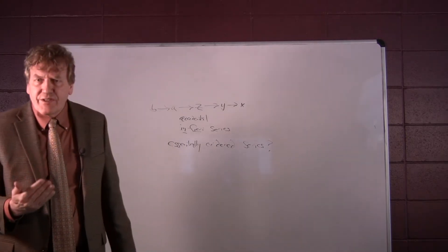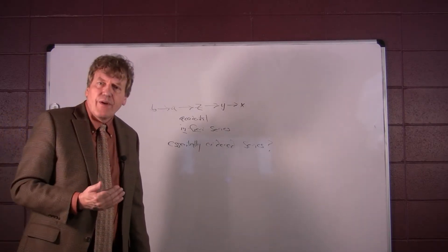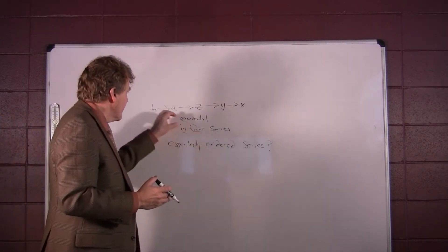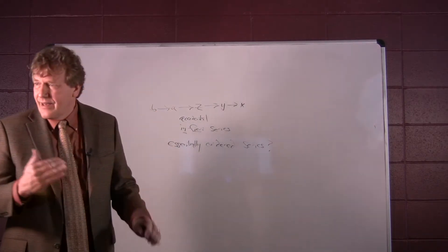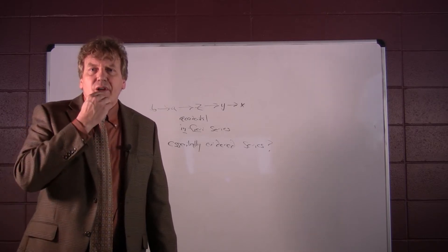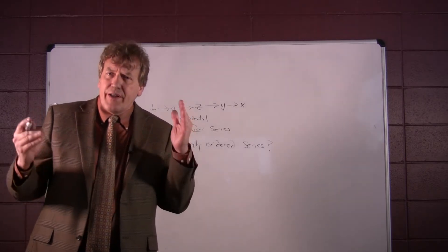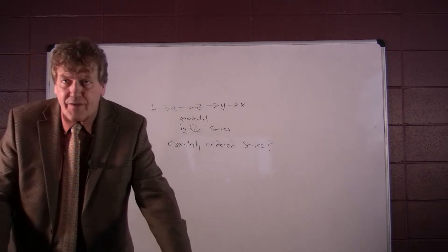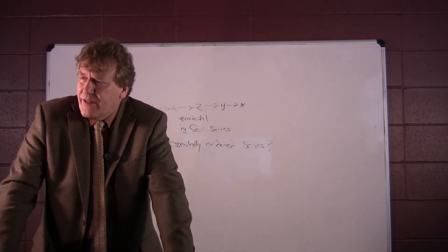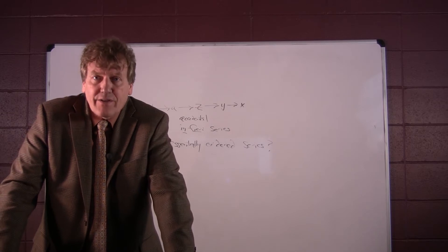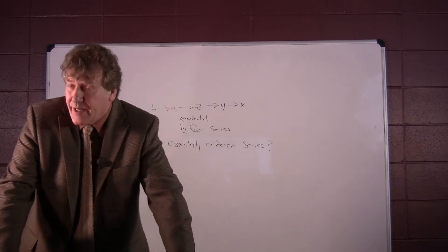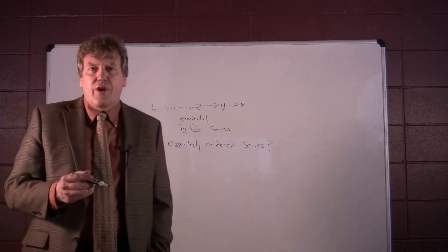Scotus offers several arguments trying to show that an essentially ordered series must terminate in a first efficient cause. Now he argues, if there were an infinite series of essentially ordered causes, the totality of things affected would depend on some prior cause.